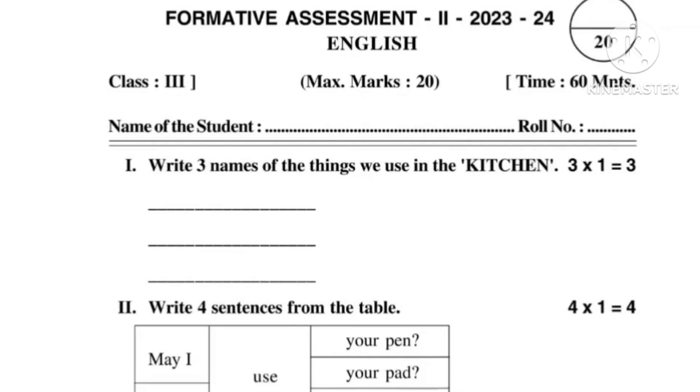Question number 1: Write three names of things we use in the kitchen. Number 1: kitchen stove. Number 2: frying pan. Number 3: oven.